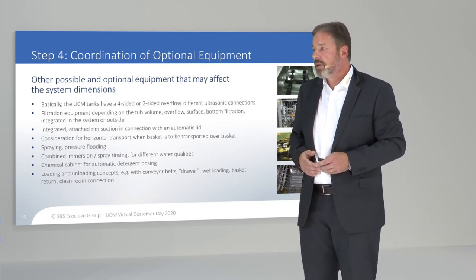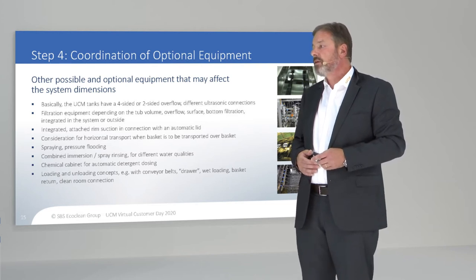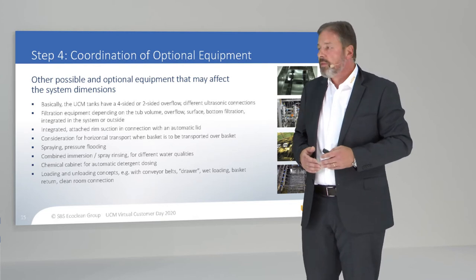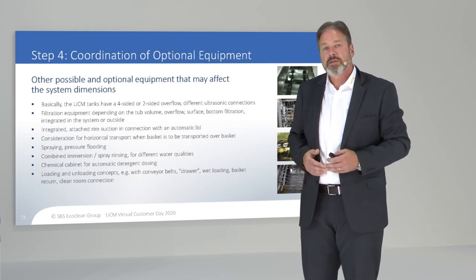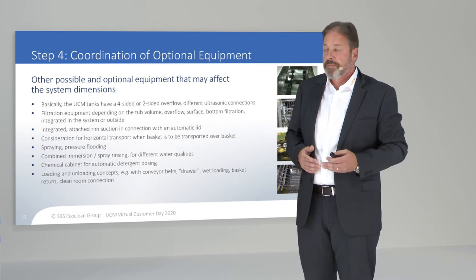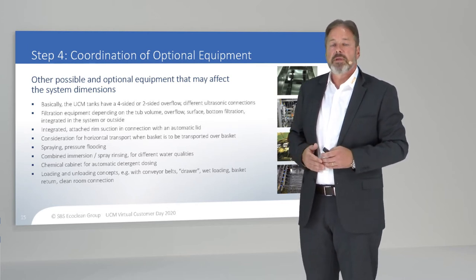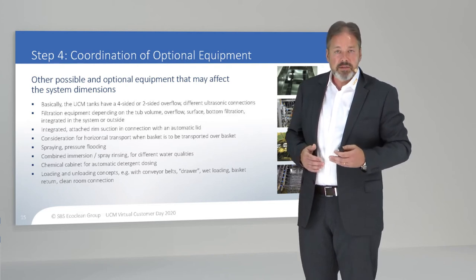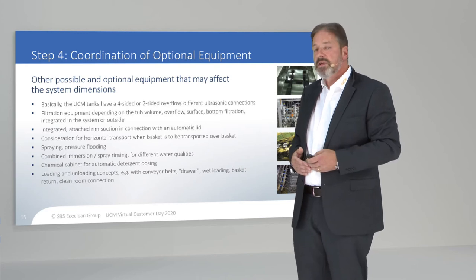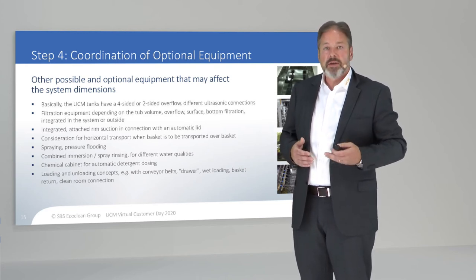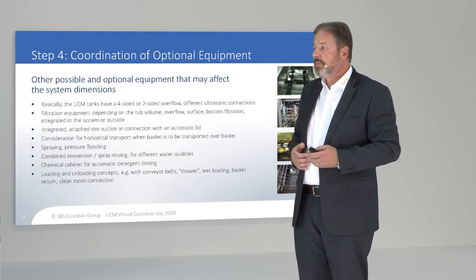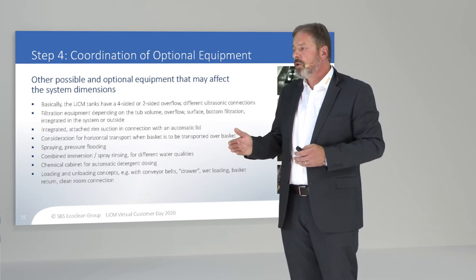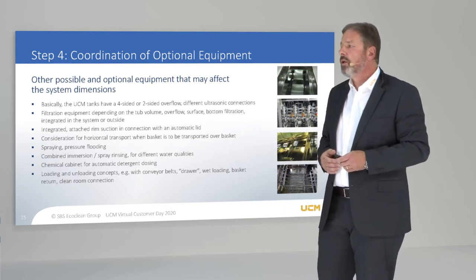The chemical cabinet for automatic detergent dosing is important if you want to automate the flow of cleaning agents. This ensures the same conditions throughout one or two days — you refill with fresh water via a flow meter and set the chemical dosing values inside the system. Also important is to know the loading and unloading concepts, as there are different kinds of possibilities.